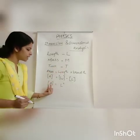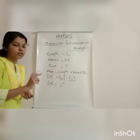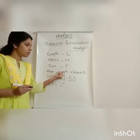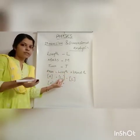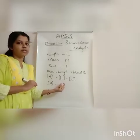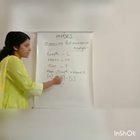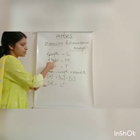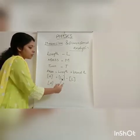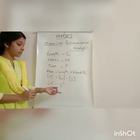The dimension of area is 2 in length, 0 in mass, and 0 in time. It is independent of mass and time. So the dimension of area is written as M raised to 0, L squared, T raised to 0.